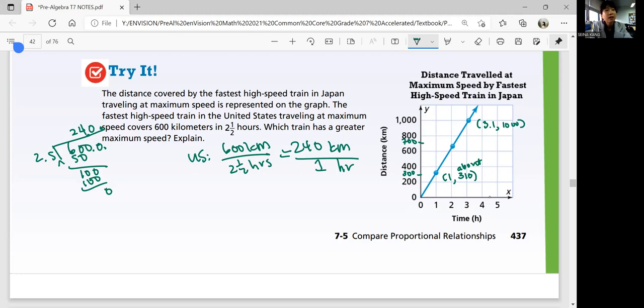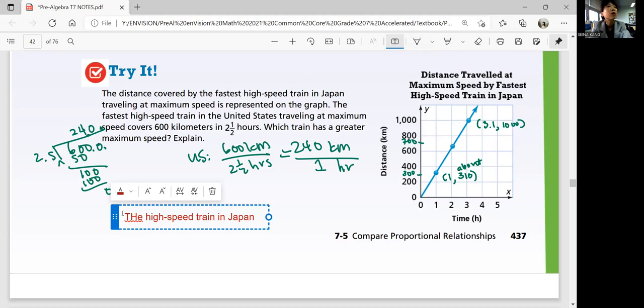But it's definitely greater than 240, right? So you can say that the Japan is going to be faster. The high speed train in Japan has a greater maximum.